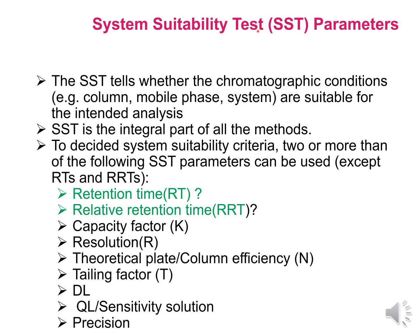System suitability test parameters, or SST parameters. The SST tells whether the chromatographic conditions — for example, column, mobile phase system — are suitable for the intended analysis or not. If SST passes, then analysis is started. If it fails, then correction is made, and after that analysis is started. SST is the integral part of all methods. In any method, at least two SST parameters must be kept.